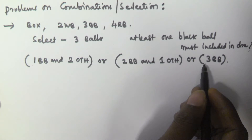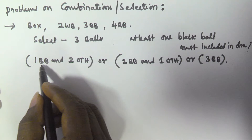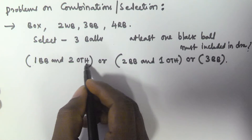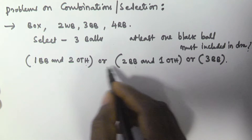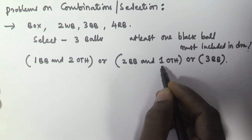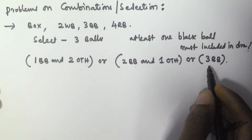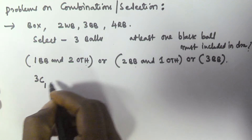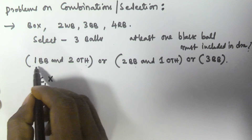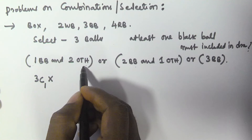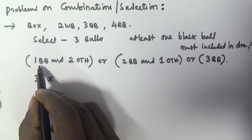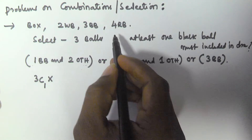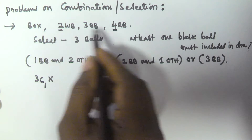At least one means the selection will contain one, two, or all three black balls. The others includes white and red balls. Selecting one black ball out of three black balls is 3C1, and selecting two other balls from the six remaining (four red plus two white) is 6C2.